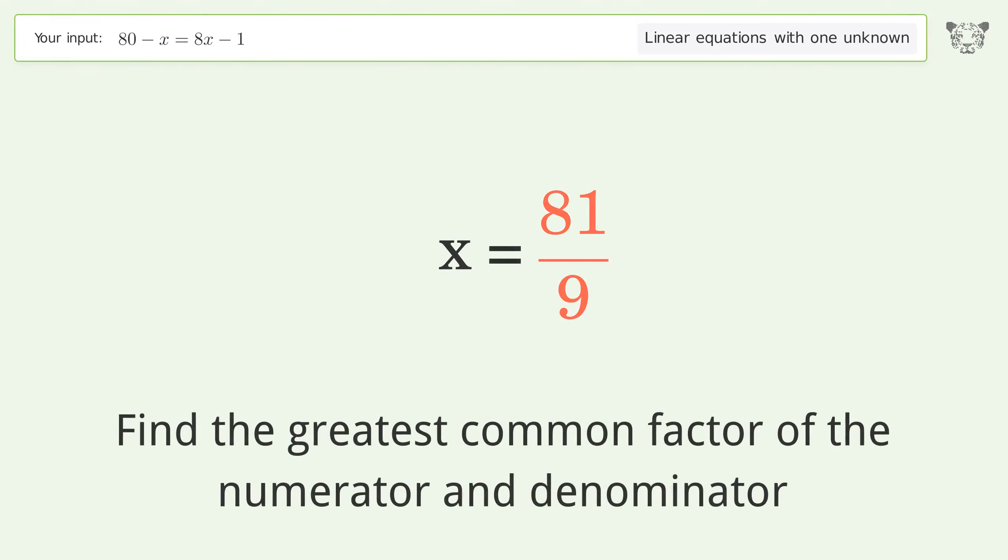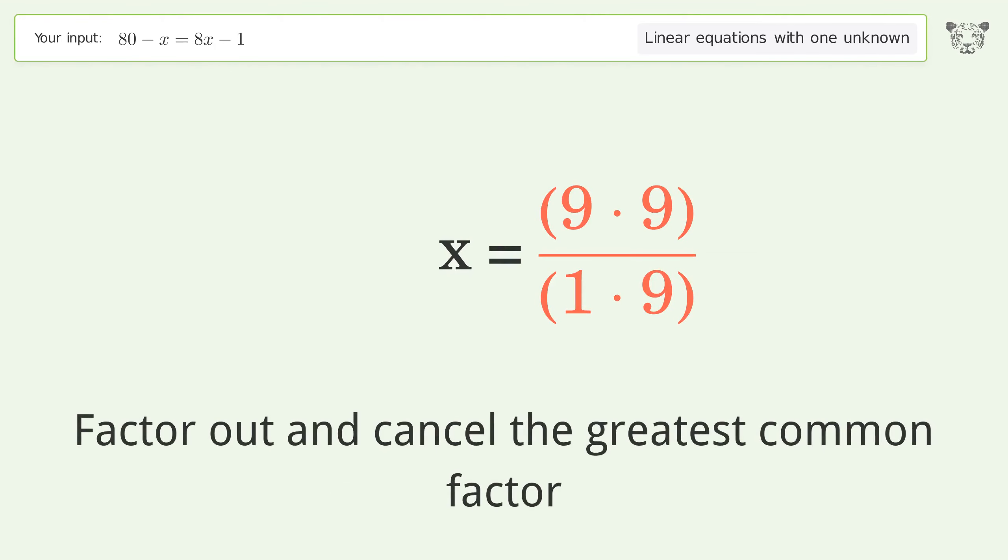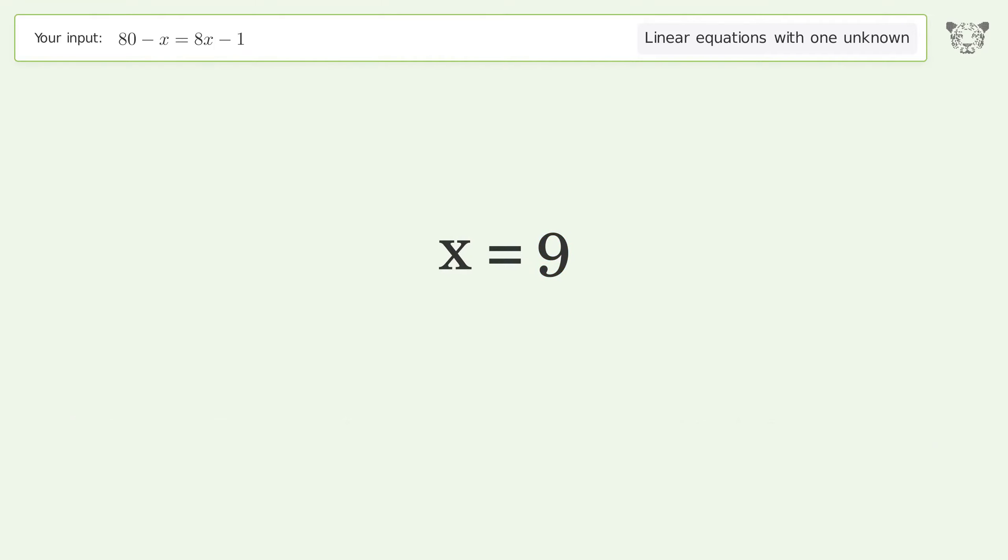Find the greatest common factor of the numerator and denominator. Factor out and cancel the greatest common factor. And so the final result is x equals nine.